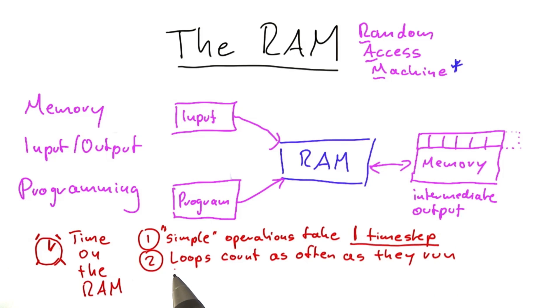If you have a loop in your program, such as a for loop, this will count not as a simple operation, but count as often as it runs. So if you have a loop that executes a simple operation 100 times, that will count as 100 time steps.